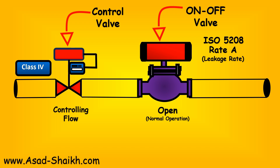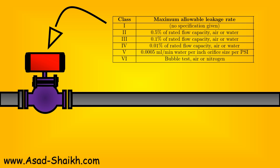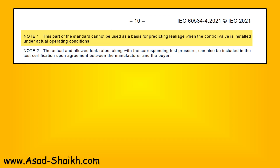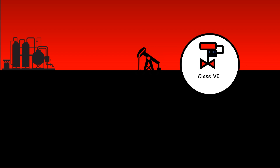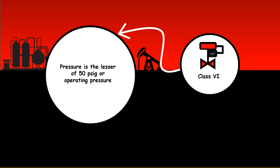This solution may seem costly, but compared to a $500 million loss it is very economical. Returning to the original question: will the valve in actual service have the same leakage rate as the standard? The IEC standard itself states in Note 1 that this standard cannot be used as a basis for predicting leakage rate under actual operating conditions. The shop test uses conditions like 50 PSIG, but real differential pressures could be 100 bar, or the fluid could be hydrogen instead of air — so leakage will significantly increase, and you cannot rely solely on the control valve to completely seal the application.